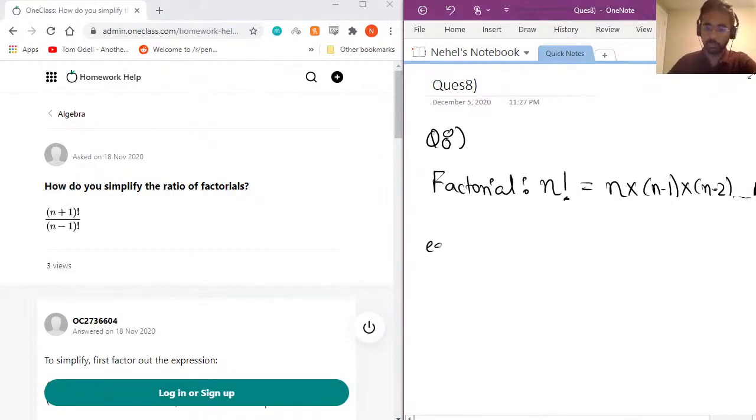Just to give you an example, 4 factorial would be equal to 4 times 3 times 2 times 1. So this is basically equal to 24.